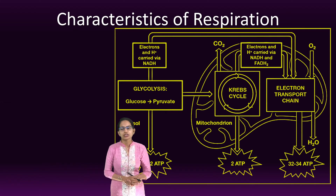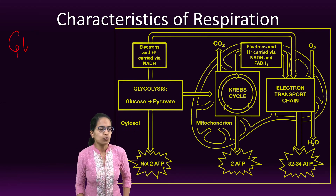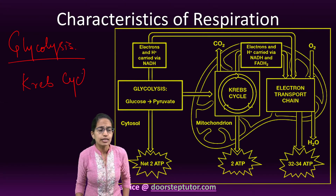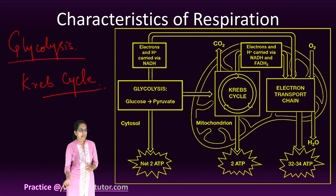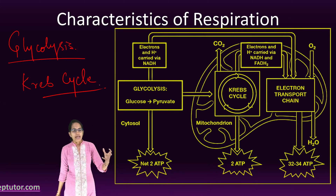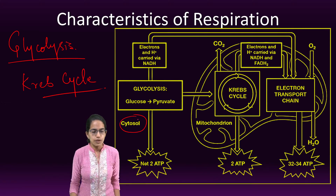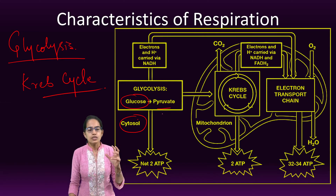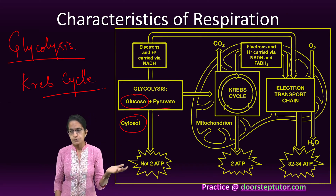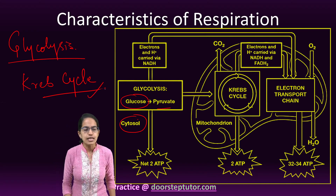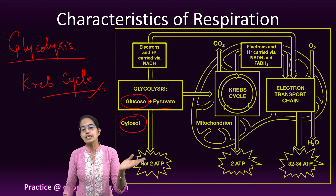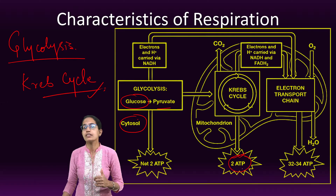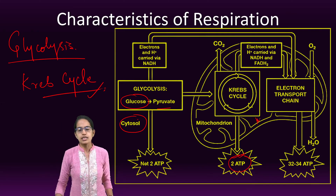Respiration occurs in two steps. The first step is glycolysis and the second is the Krebs cycle. Glycolysis is a process that occurs in the cytoplasm, where glucose gets converted into pyruvate or pyruvic acid — this occurs in the cytoplasm in absence of oxygen. The Krebs cycle is a process where pyruvic acid gets converted to carbon dioxide and water, with release of energy in the form of ATP, and this process occurs in mitochondria.